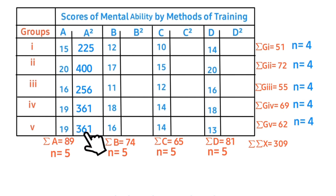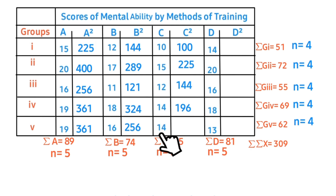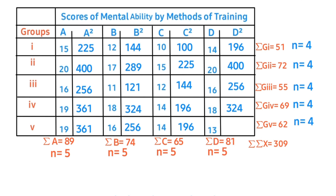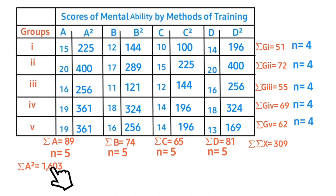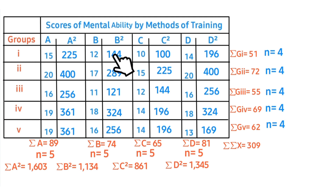For the second method: 12 squared, 17 squared, 11 squared, 18 squared, and lastly 16 squared. For the third method: 15 squared, 12 squared, 14 squared, and 14 squared. For the fourth method: 14 squared, 20 squared, 16 squared, 18 squared, and lastly 13 squared equals 169. We are expected to sum both the columns and the rows. First column sum gives 1603; the next columns continue summing their respective squared values.